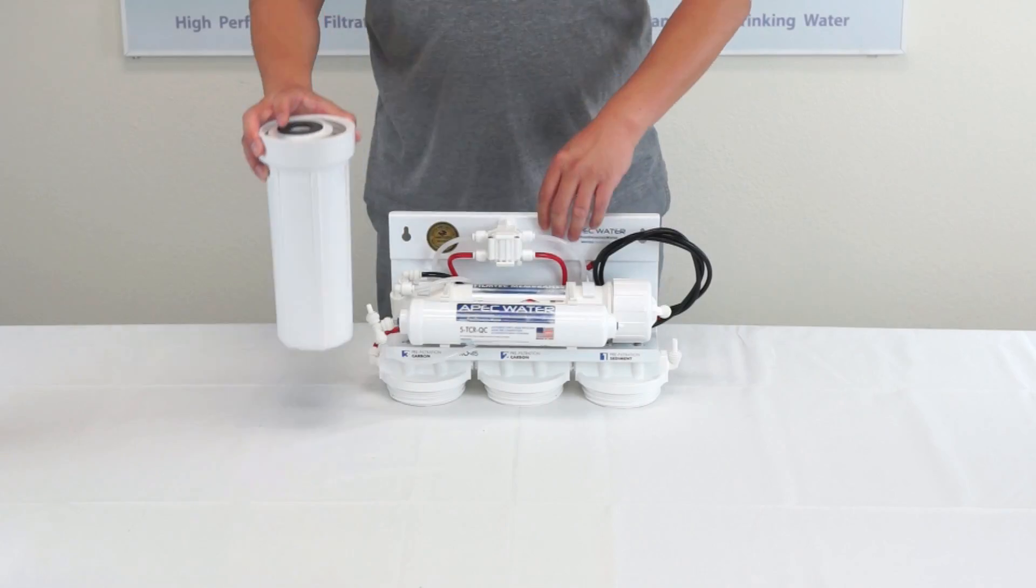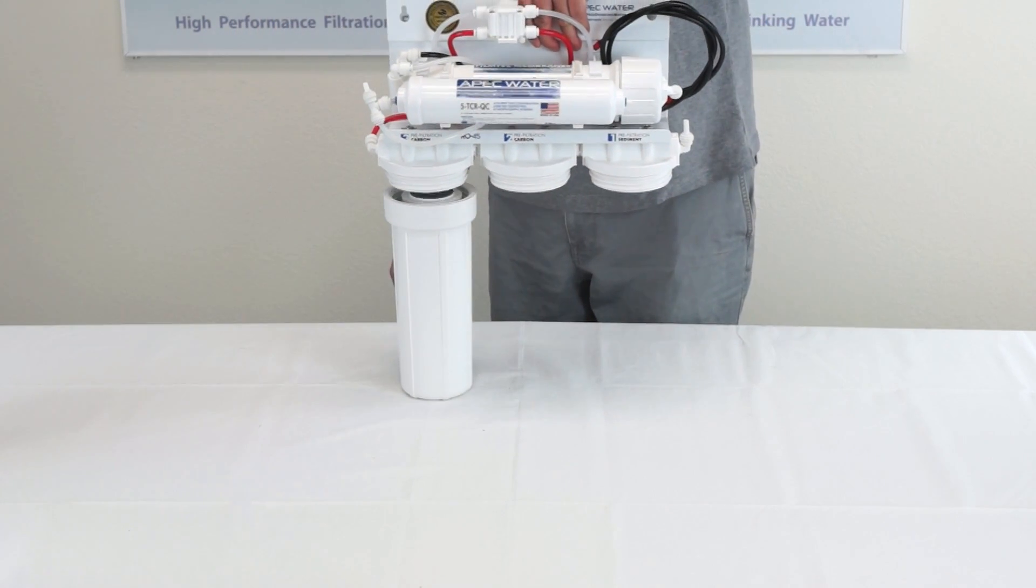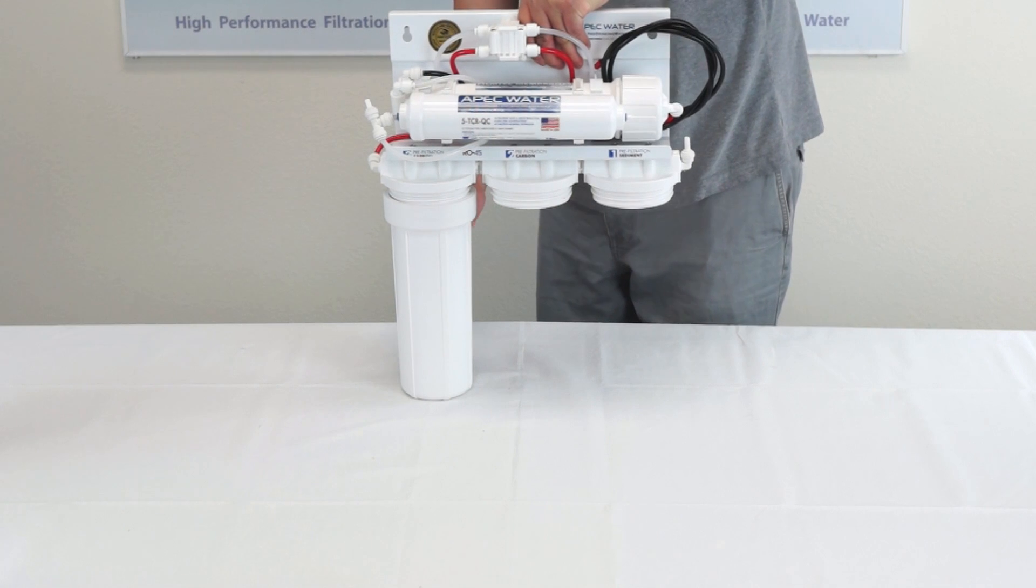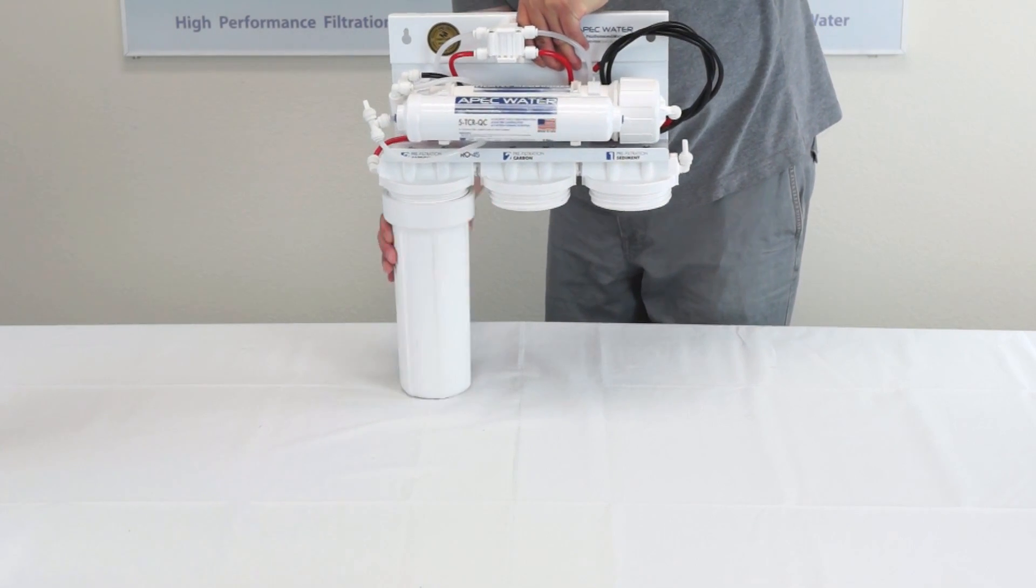When installing the filters it is best to have the filter housing on a flat surface. Position the RO head on top of the housing starting with the third stage carbon filter. Hand twist the housing onto the system by turning it clockwise.